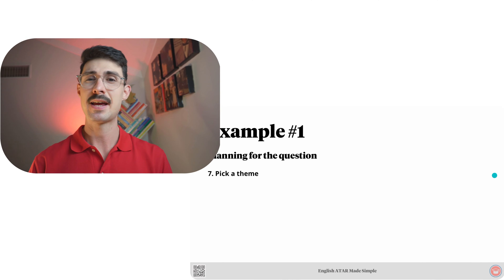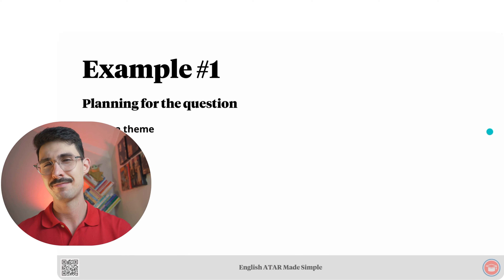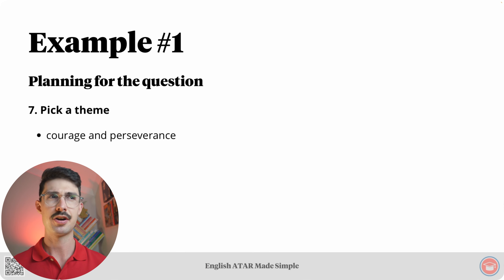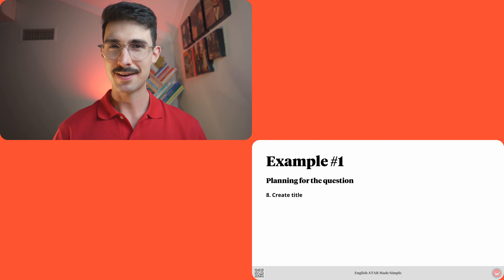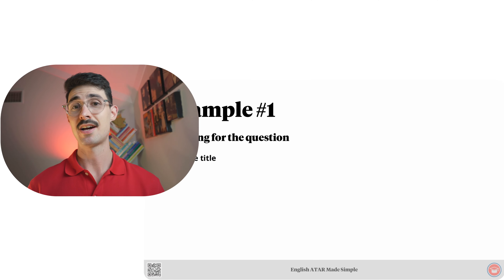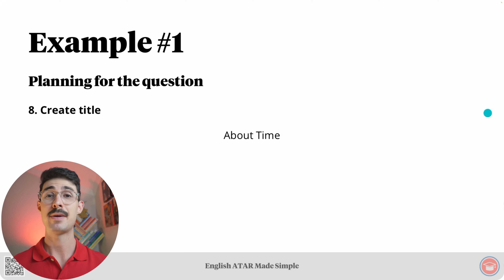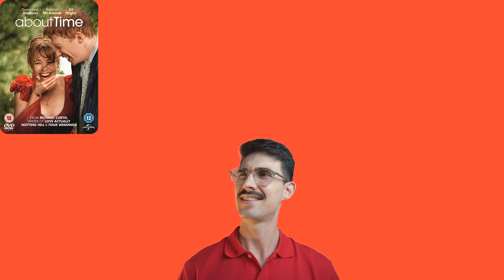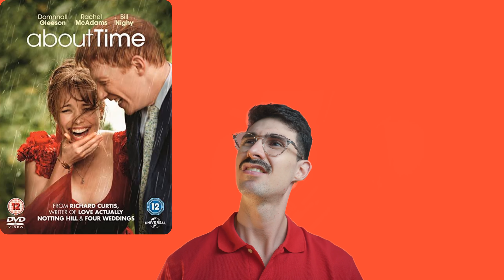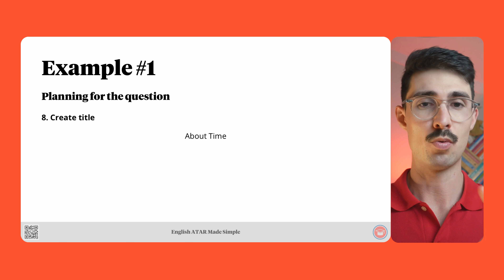For step seven, pick a theme: I've chosen courage and perseverance. Step eight, create title: my title is 'About Time.' Example one is done.